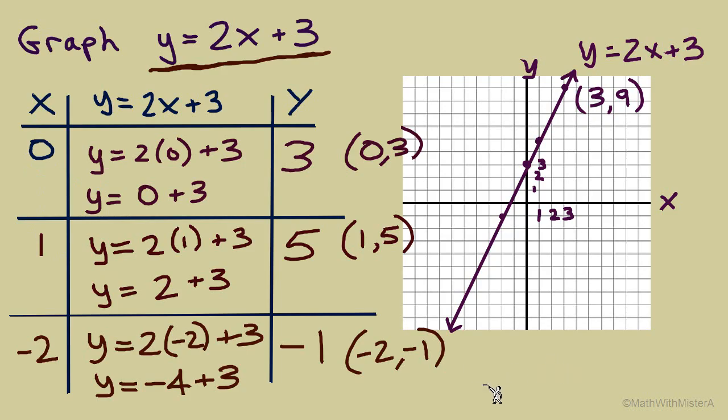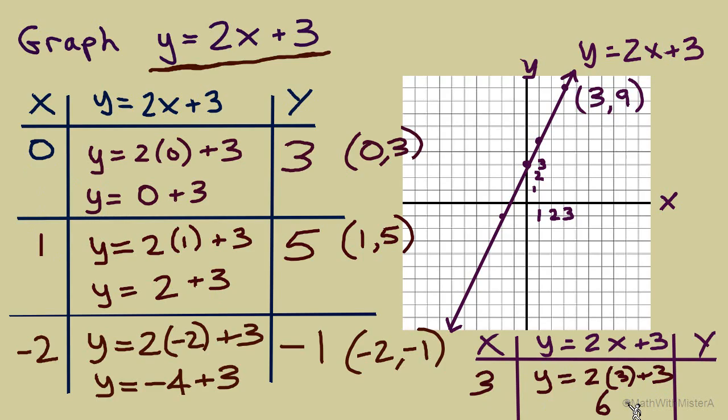If x equals 3, this equation becomes y equals 2 times 3 plus 3. And simplify 6 plus 3, so y equals 9. Exactly that point that we found on our line. So any point that we find on the line will be an ordered pair solution. It includes integers and whole numbers, and even decimals and fractions.